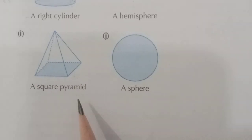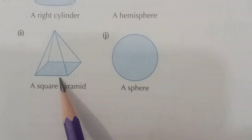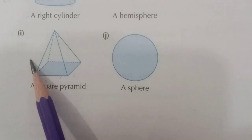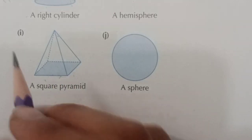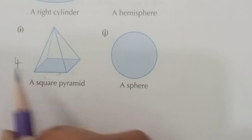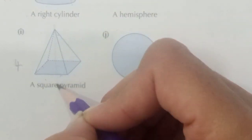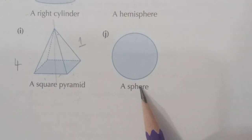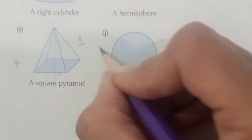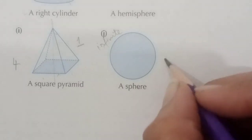Part I is a square pyramid. Its base is a square, which has 4 lines of symmetry, so the number of planes of symmetry is 4. The number of axes of rotational symmetry is 1. Part J is a sphere — both the number of planes of symmetry and the number of axes of rotational symmetry are infinite.